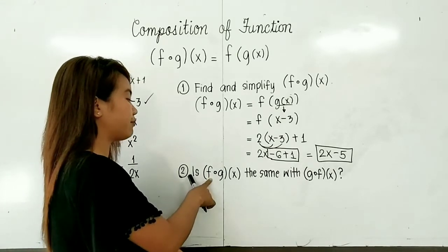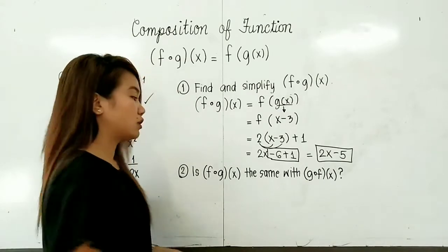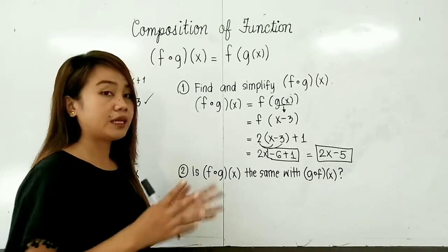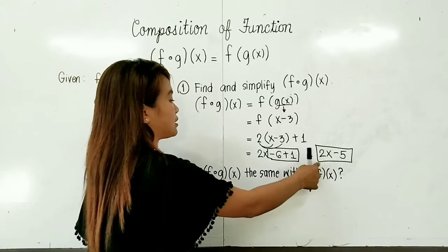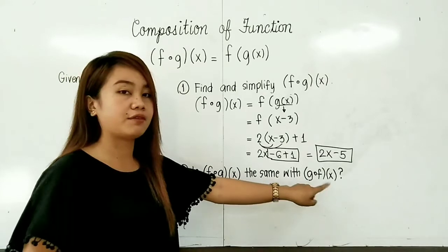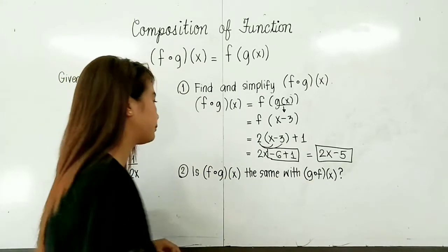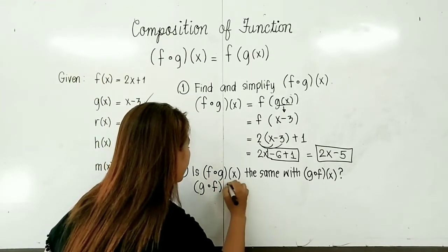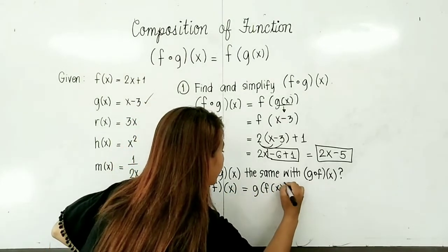Now, question number 2: Is f composed of g of x the same as g composed of f of x? The two functions f and g are interchanged. The question is, are they the same? Let's try. We already know f composed of g of x equals 2x minus 5. Let us see if it equals g composed of f of x, that is g of f of x. So let us solve for g of f of x.